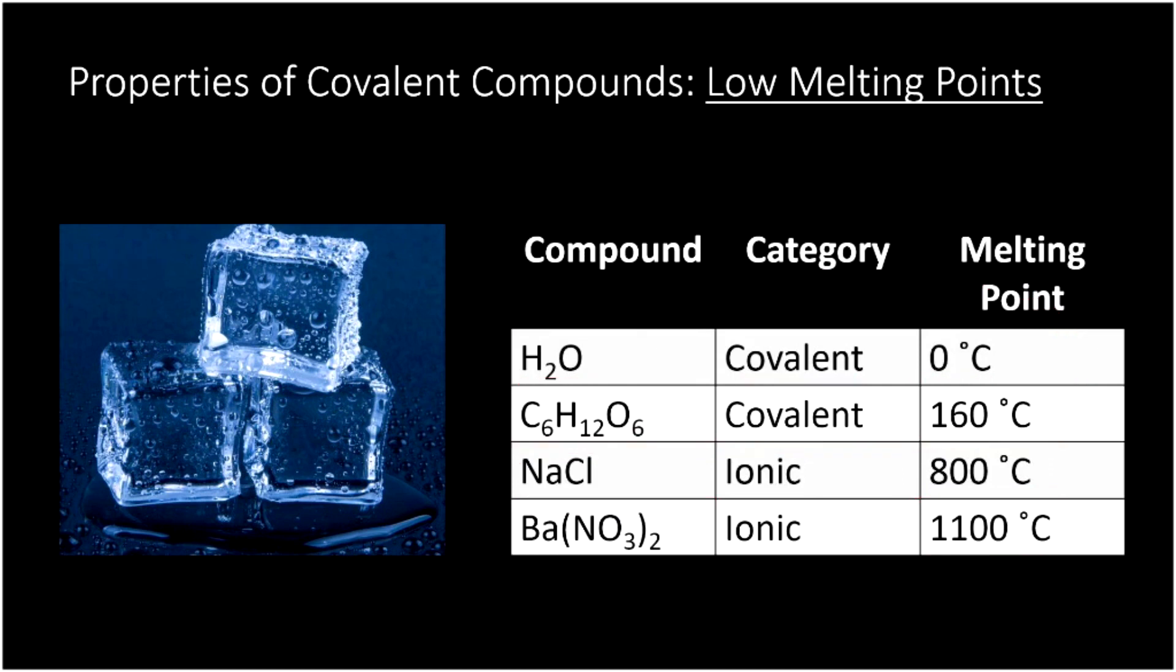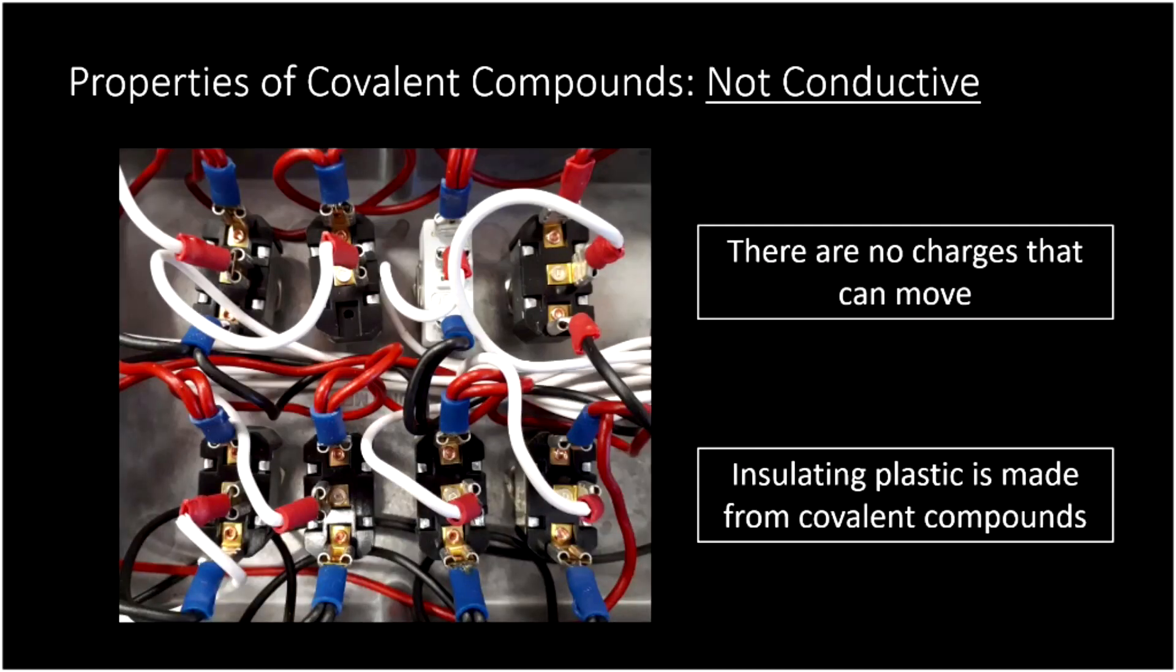Another important property of covalent compounds is that they're not conductive. The reason they're not conductive is because there's no charges that move around. Remember, the electrons are shared equally, and so that means that neither of those elements is going to be charged. And if there's no charges, there can be no electric current. That stands in contrast to our ionic compounds, which had charges. And if you melted them, then they could move and that would conduct electricity.